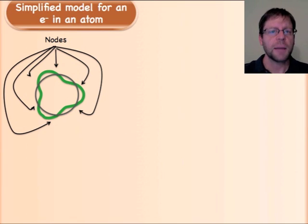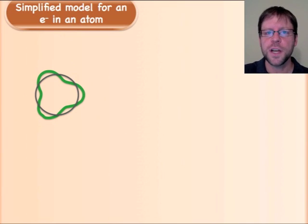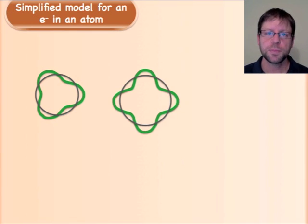I'm showing six nodes because that's easy for me to draw. It certainly could have far fewer nodes than that, but it must be an integer number of nodes. So that means that this is another possible solution for this, where now I've added some nodes and I still can make a standing wave. This would be a higher energy.